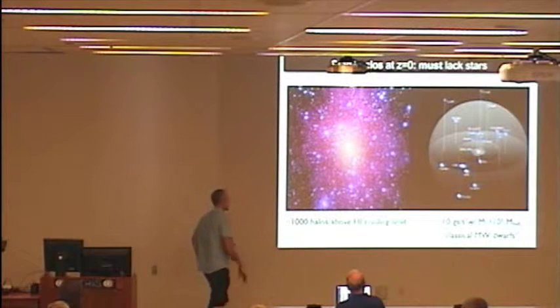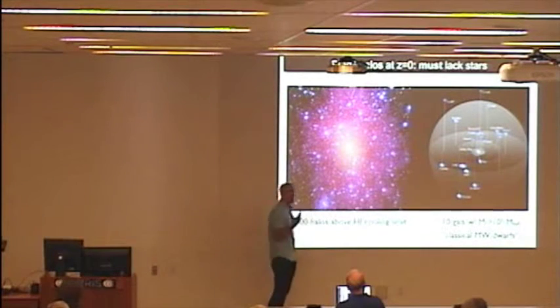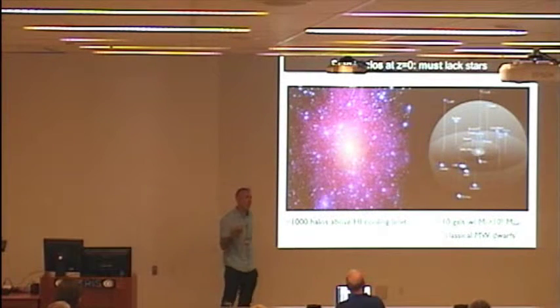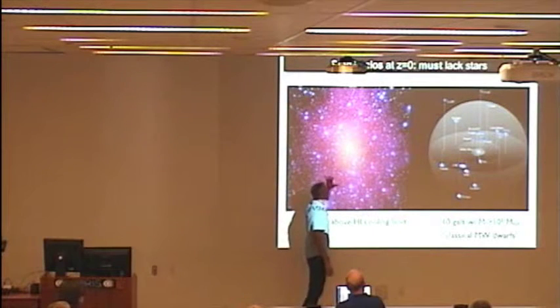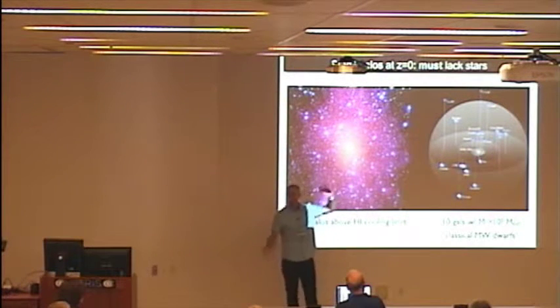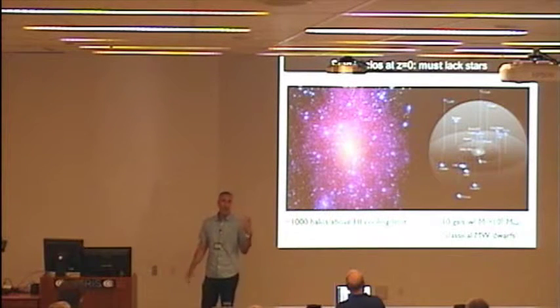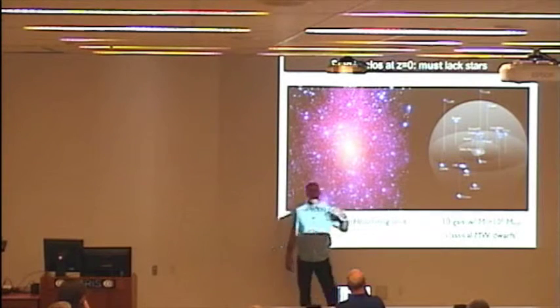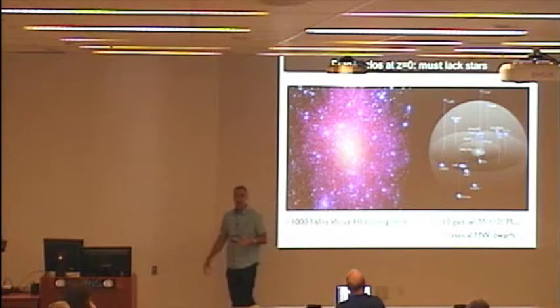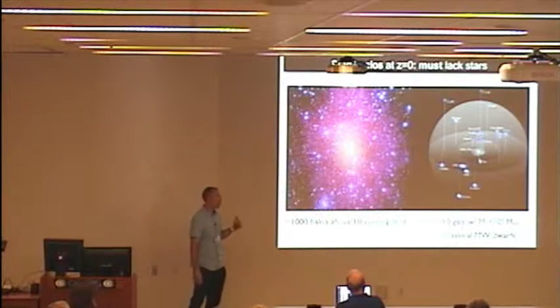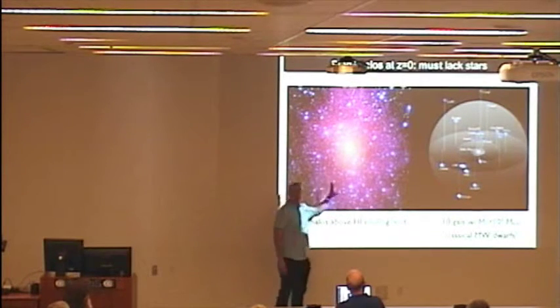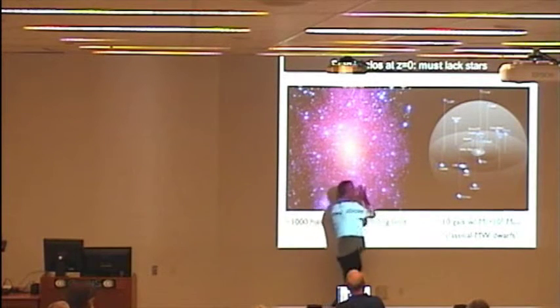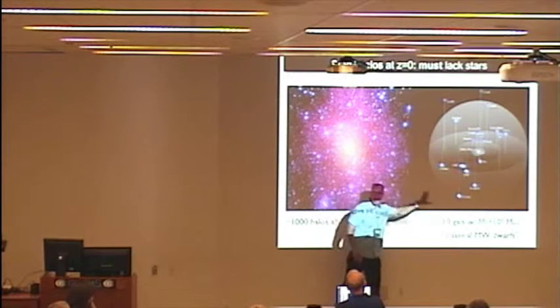So I like to start off this talk with sort of this basic kind of tension between sort of conventional wisdom at the high redshift universe and low redshift universe. Low redshift universe, we have a very good understanding that because galaxies like the Milky Way ought to be surrounded by thousands and thousands of potentially star forming halos, that star formation needs to be suppressed in these objects. So there are about 10 classical dwarf galaxies around the Milky Way with stellar masses above about 10 to the 5, while there are about 1,000 halos that should be in this volume that are above the atomic cooling limit.